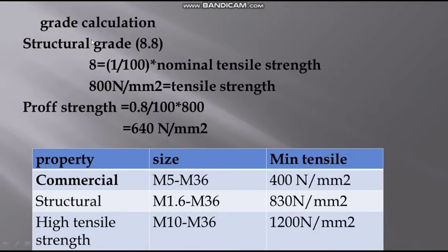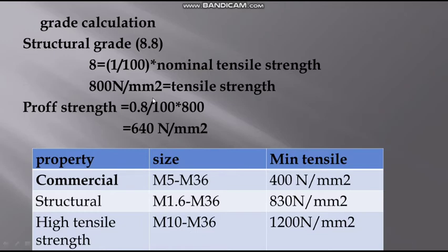First, this is a grade calculation. What is structural grade? We have structural grade 8.8. The first number, 8, multiplied by 100 gives 800 N/mm², which is the tensile strength. The proof strength is 0.8 times the tensile strength, so 0.8 divided by 100 into the tensile strength gives the proof or breaking strength.